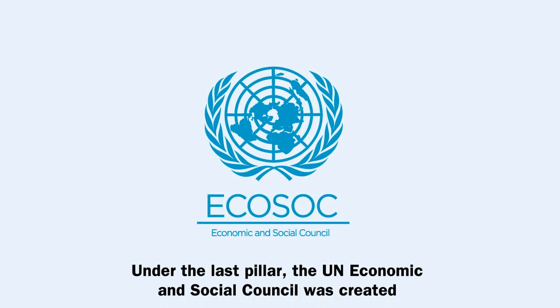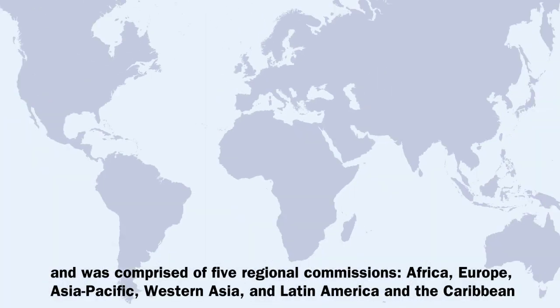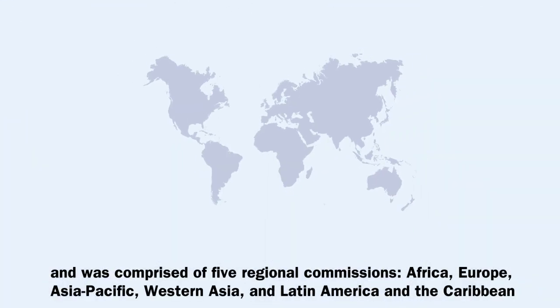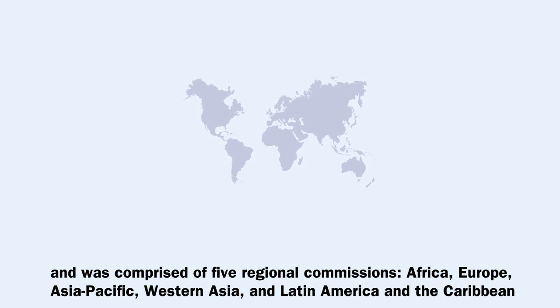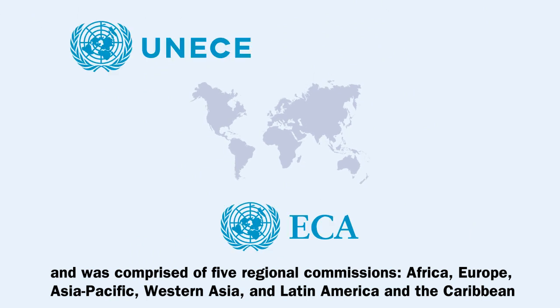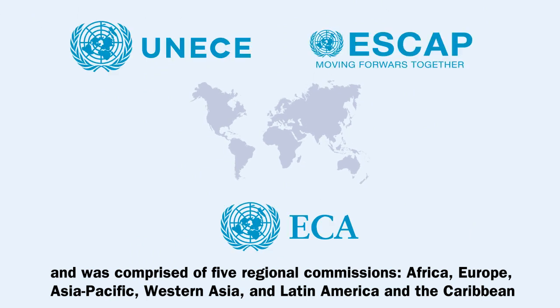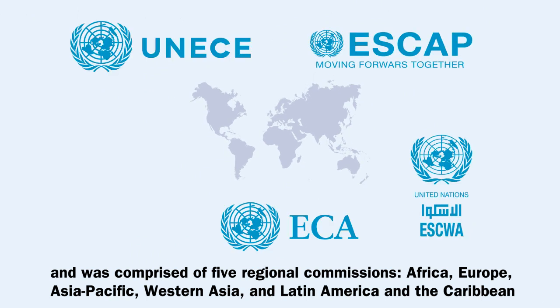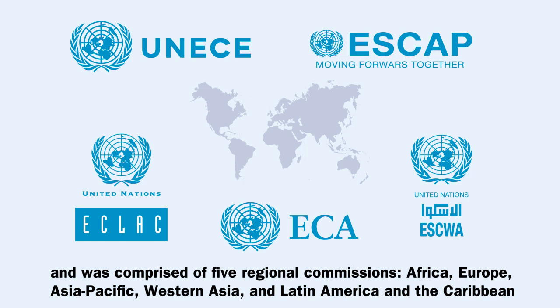Under the last pillar, the UN Economic and Social Council was created and was comprised of five regional commissions: Africa, Europe, Asia Pacific, Western Asia, and Latin America and the Caribbean.